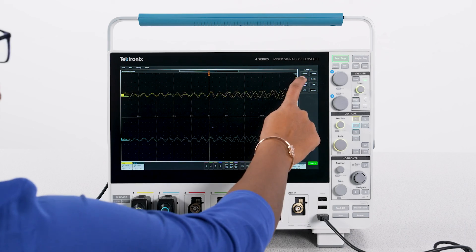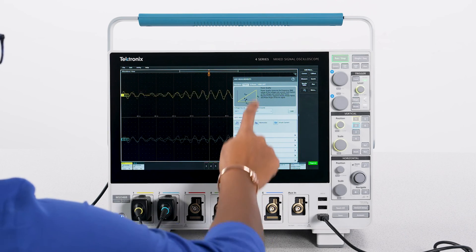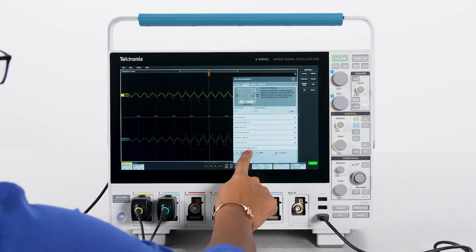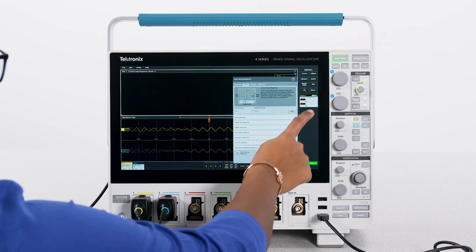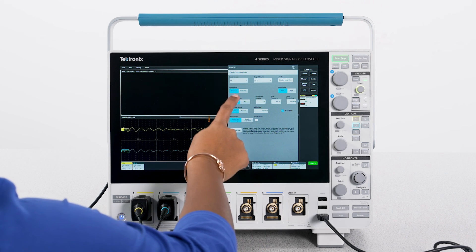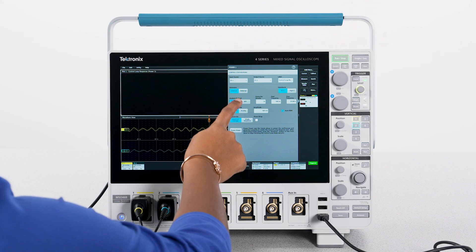Bode plots and gain or phase margin measurements enable designers to determine the stability of a power supply control loop. For this example, I'll use the scope's built-in function generator.